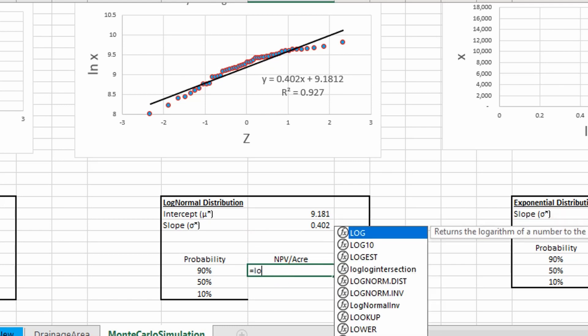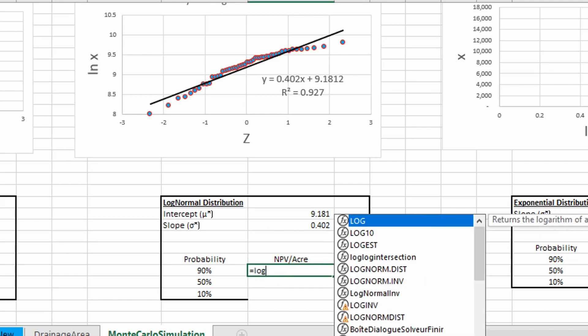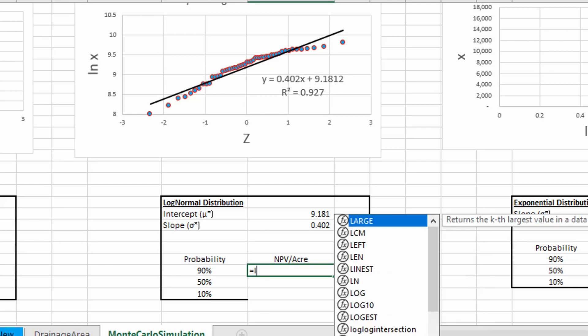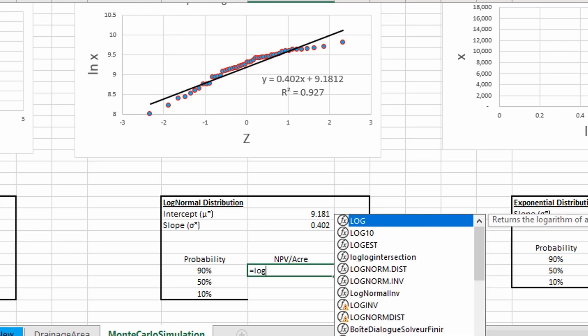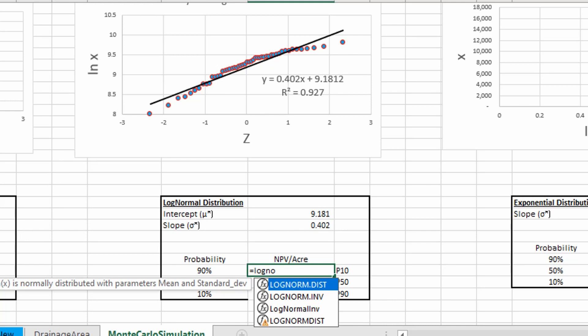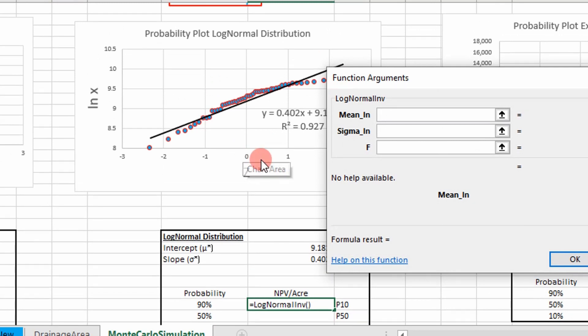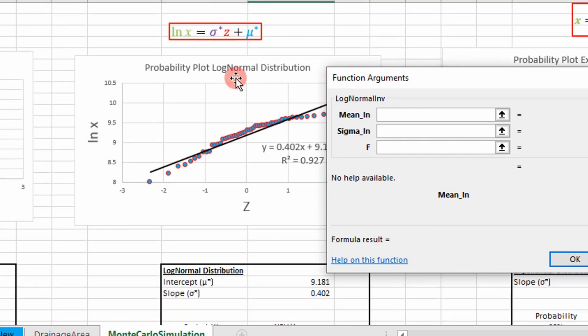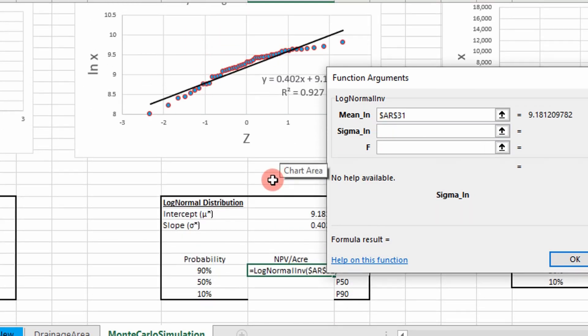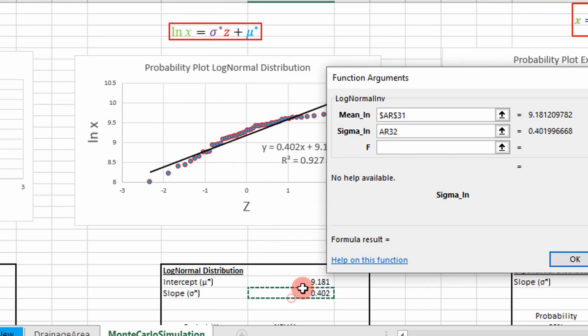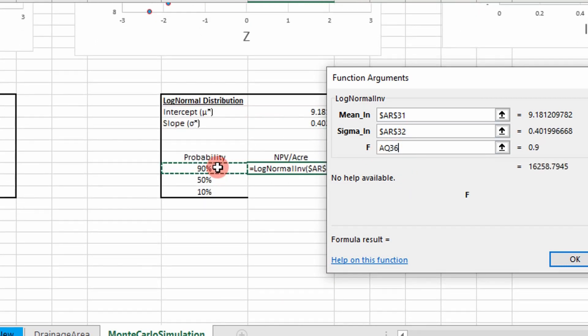It's called the log normal inverse. So it's going to take our mean up here. So our mean, freeze that. Our standard deviation, which is our slope, and then our cumulative probability value.